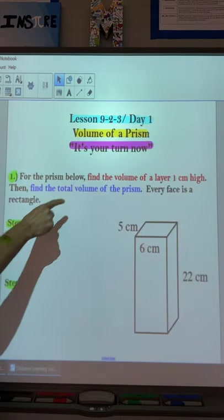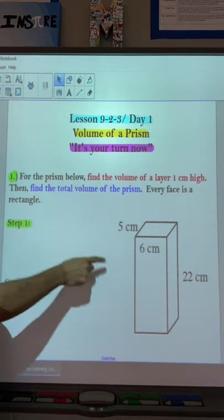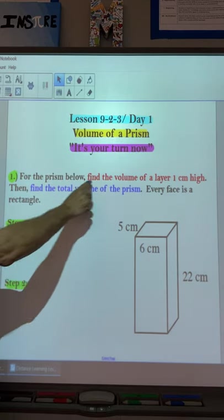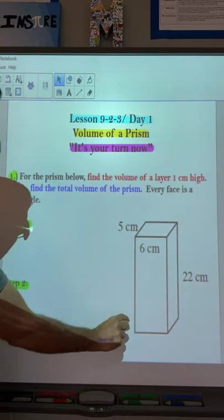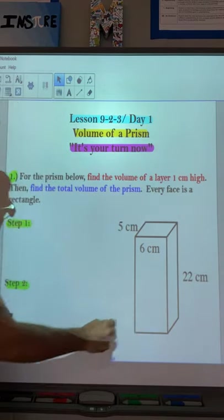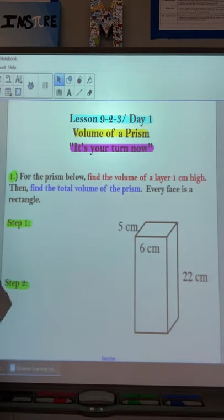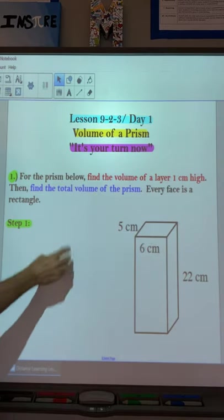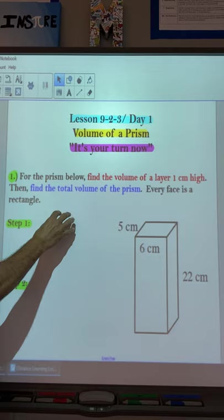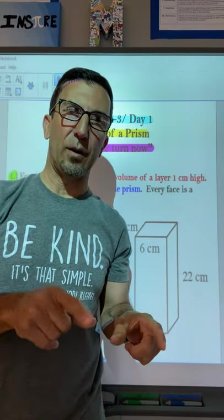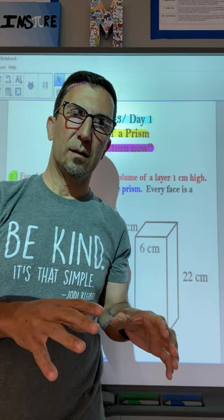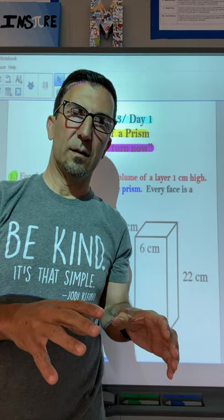This is what I want you to do. So I want you to find the volume of a layer one centimeter high. So find me the base. And then I want you to find me the total volume. Every face is a rectangle. So you should have two steps. Find me the volume of the base. And then find me the total volume. So this is where you can pause it right now. So go ahead and press pause.